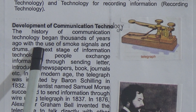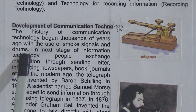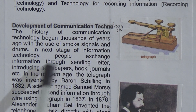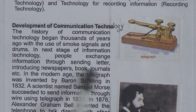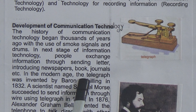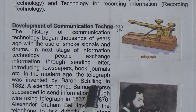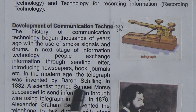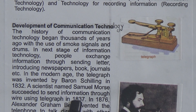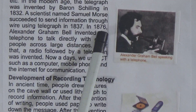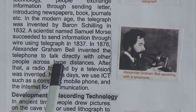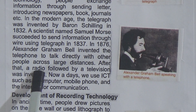The history of communication technology began thousands of years ago with the use of smoke signals and drums. In the next stage, people exchanged information through sending letters, newspapers, books, and journals. In the modern age, the telegraph was invented by Baron Shilling in 1832. A scientist named Samuel Morse succeeded in sending information through wire using the telegraph in 1837. In 1876, Alexander Graham Bell invented the telephone to talk directly with other people across large distances.